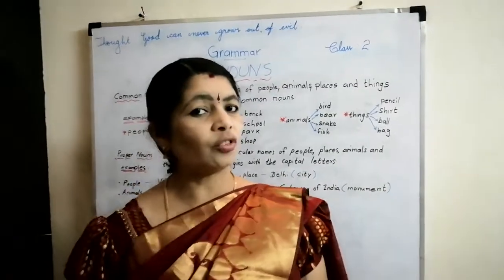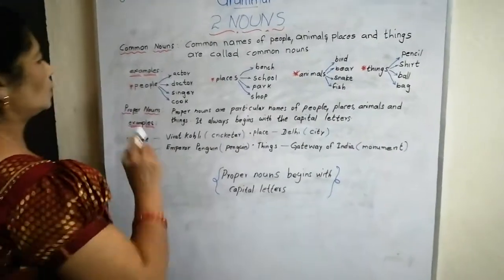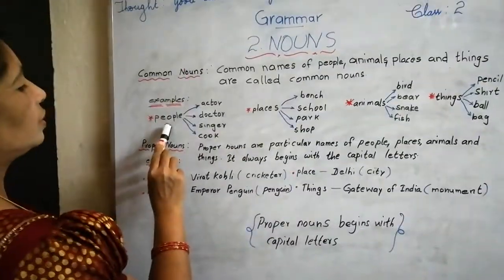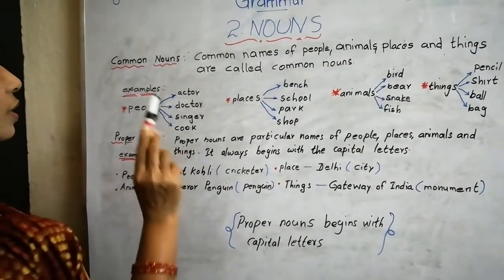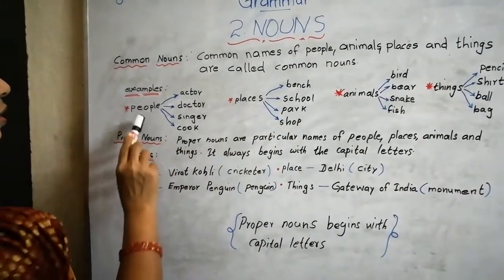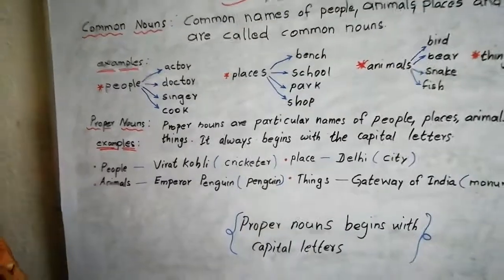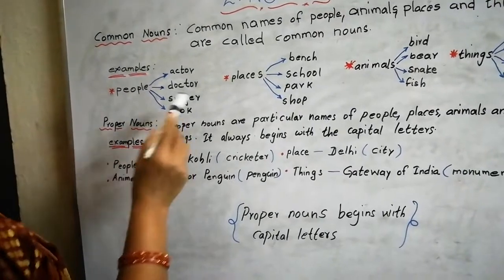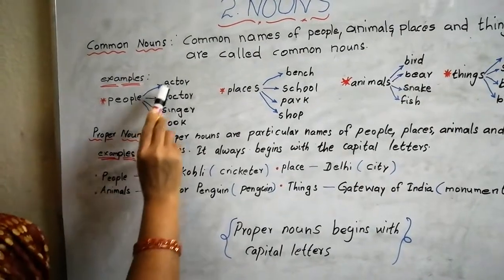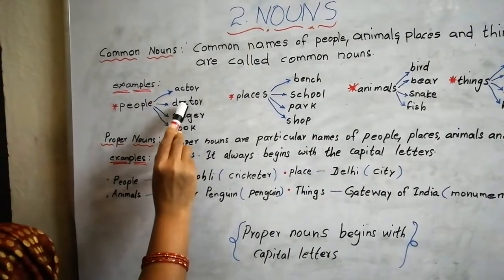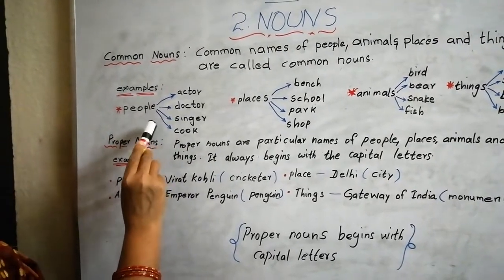Can you give examples for common nouns? See the examples. People: actor, doctor, senior, cook. See — actor, the name is not mentioned here. Doctor — here also the name is not mentioned. So people: actor, doctor, senior, cook. These are examples for people.